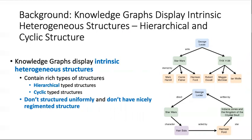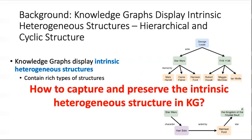In the lower figure, each entity connects with another entity in a cycle, in a way that George Lucas is at the same level as Star Wars, Solo, Harrison Ford, Indiana Jones, and the Kingdom of the Crystal Skull. Then we come up with the question: how to capture and preserve the intrinsic heterogeneous structure in KG?